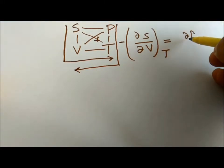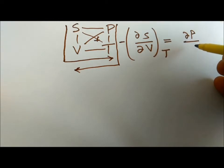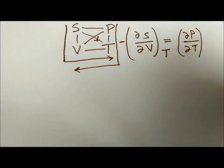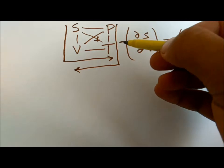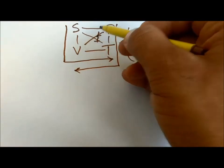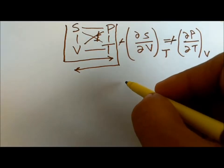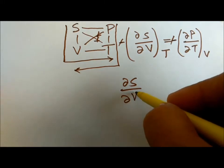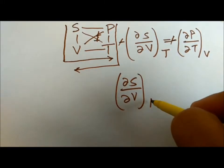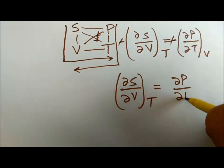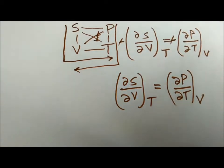So it is del P over del T at constant V. When we go from P to V the arrow again goes down, so it is again with a negative sign. Negative times negative cancels, so the relation is: del S over del V at constant T equals del P over del T at constant V. This is Maxwell's second relation.